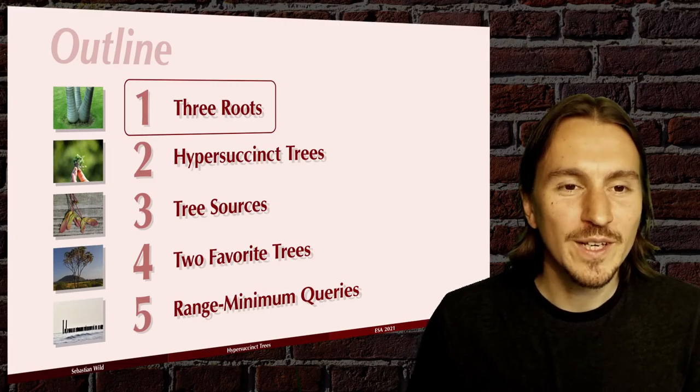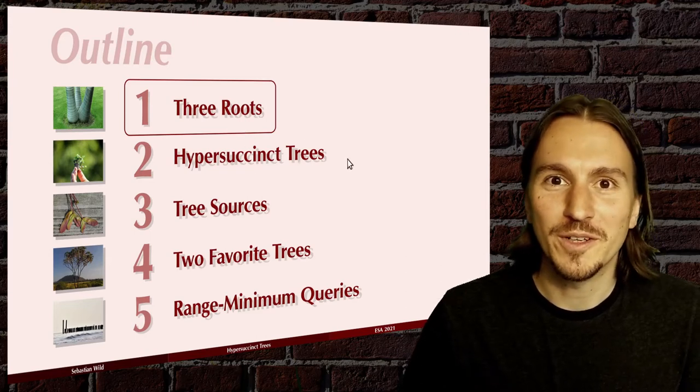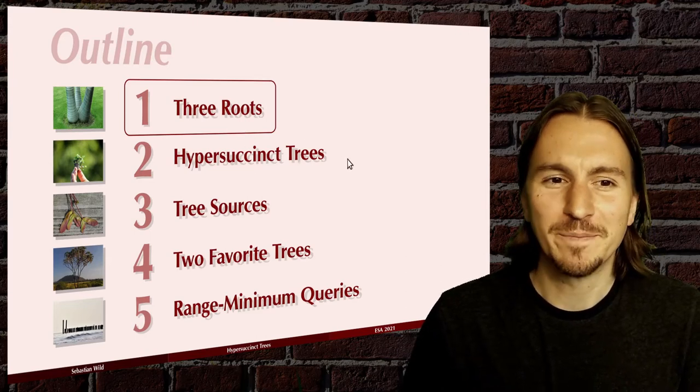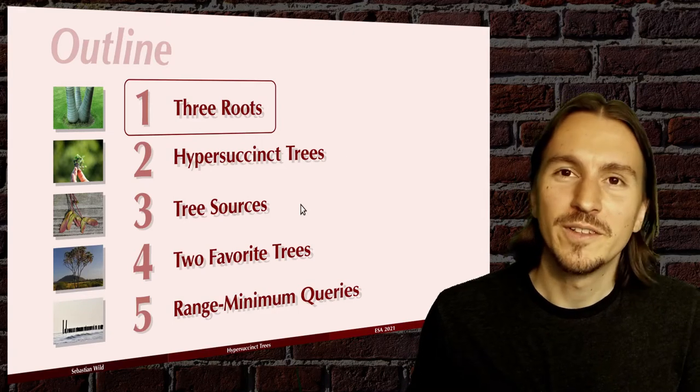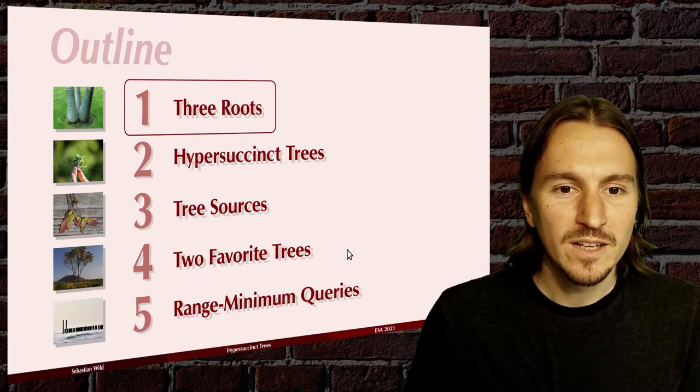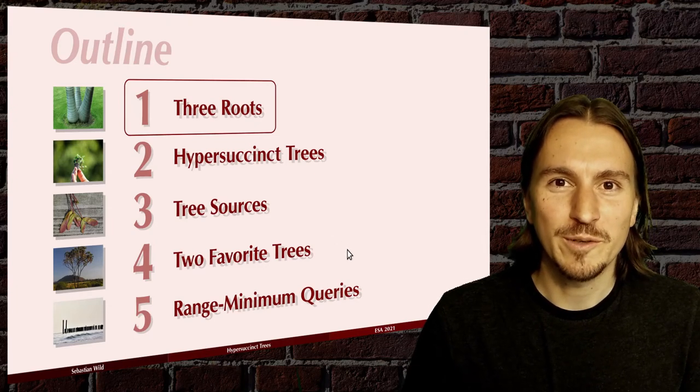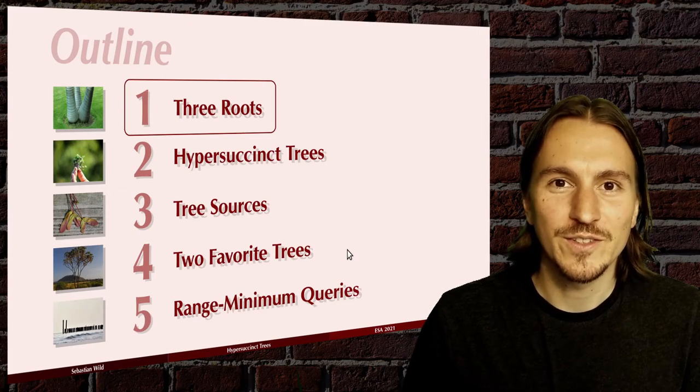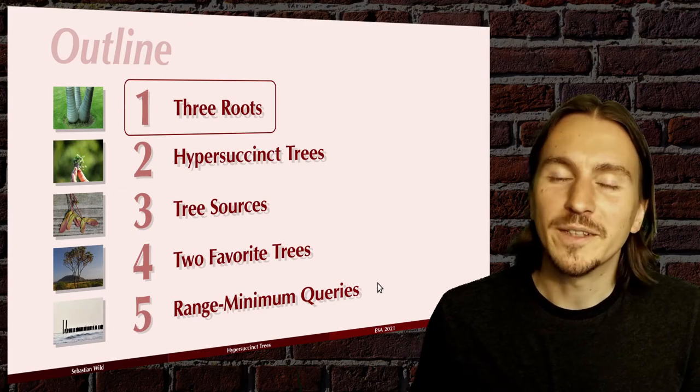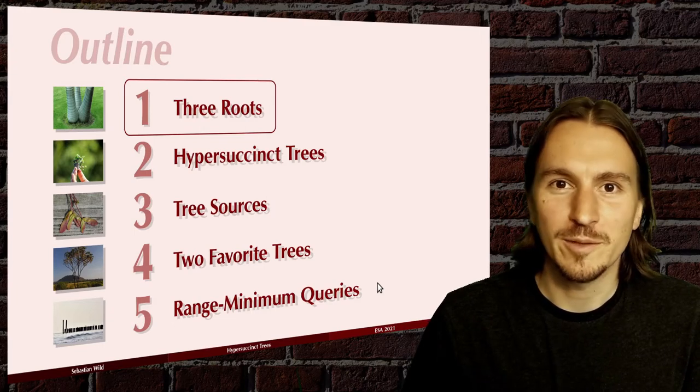Here's my outline for today. I will briefly discuss where this work comes from and then show what our hyper succinct trees are. We'll talk about tree sources and distributions over tree shapes, and in the long version of this talk I will give two examples where we exemplify our analysis in detail and finally we'll apply it to get new data structure results for the RMQ problem.